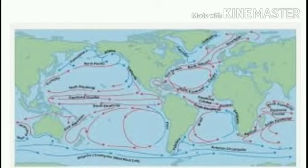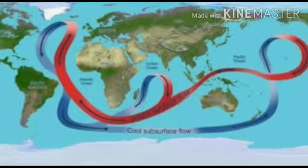The cold current along the coast of California makes the coastal region cooler than normal. The most striking example of a warm current is the Gulf Stream and its continuation called the North Atlantic Drift. These warm currents are responsible for raising the winter temperature in the coastal regions of northwest Europe.